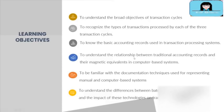Fourth, to understand the relationship between traditional accounting records and their magnetic equivalents in computer-based systems. Fifth, to be familiar with the documentation techniques used for representing manual and computer-based systems. Finally, to understand the differences between batch and real-time processing and the impact of these technologies on transaction processing.